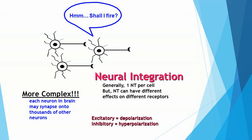Here I'm showing you just a slightly more complex situation because there are two sending neurons and one receiving neuron, and this type of process is referred to as neural integration.